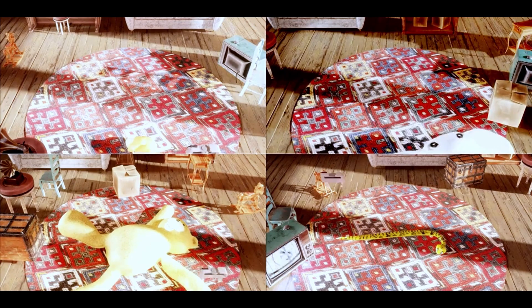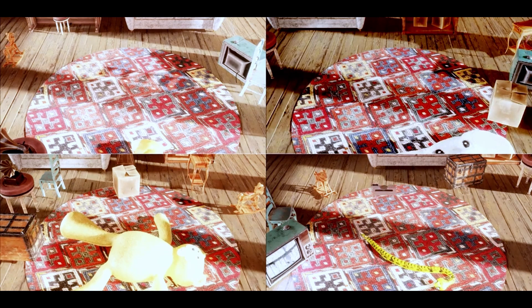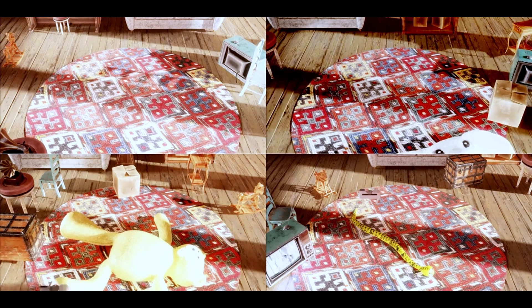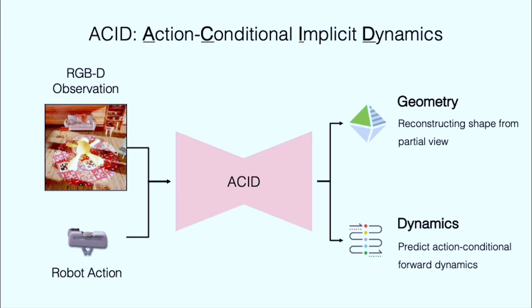ACID integrates two new techniques, implicit representations for action-conditional dynamics and geodesics-based contrastive learning. The model achieved the best performance in geometry, correspondence, and dynamics predictions over existing approaches.